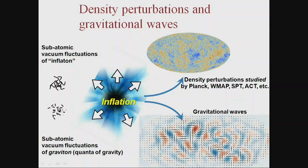Inflation is a process that inflates space but also inflates quantum fluctuations in space itself for any fields present at that time. For the inflaton field responsible for inflation, those fluctuations were inflated into density perturbations that you now see in the microwave background or galaxy structures — and that part is verified to extremely high precision, looking just like inflation. The quanta of gravity are also inflated by inflation to create a background of stochastic gravitational waves, described by very similar equations giving the amplitude of tensor perturbations.